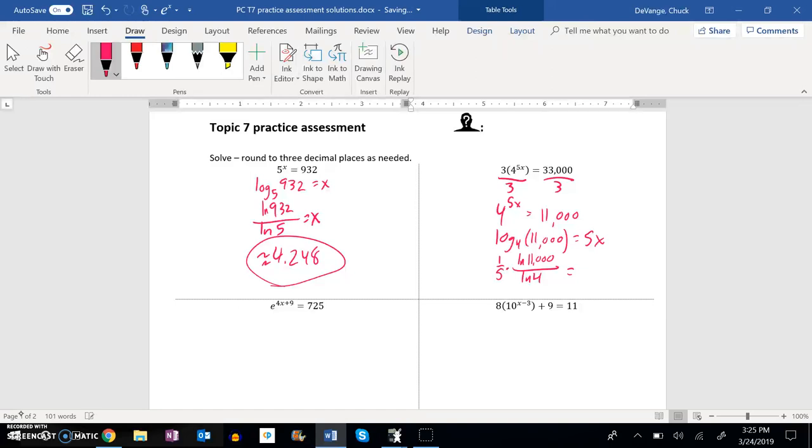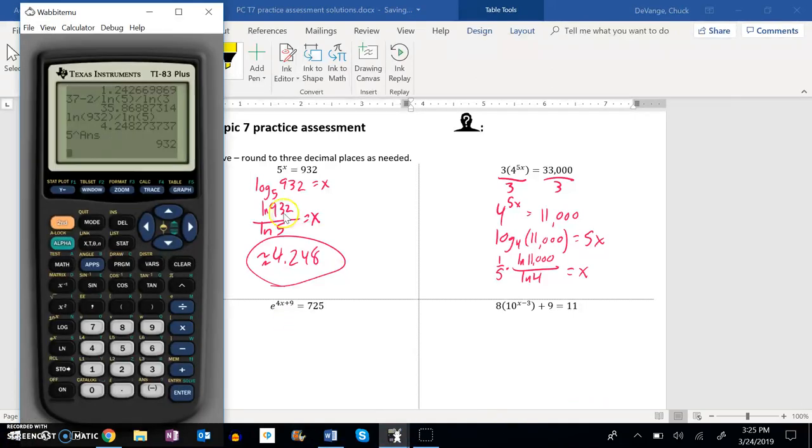In my calculator, I'll probably enter that in first and then take a fifth of it. So let me do that on my calculator. So natural log of 11,000, close off those parentheses, divided by natural log of 4 is that, but I need it divided by 5.